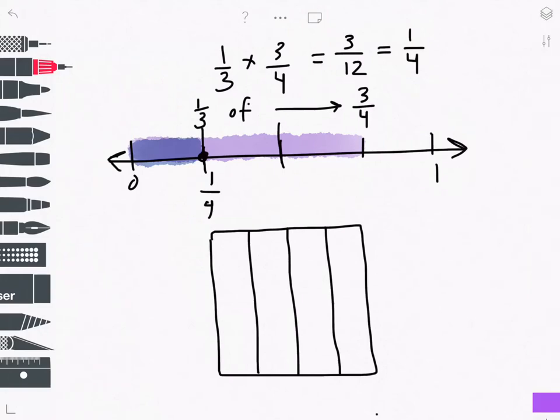I'll highlight 1 fourth, or I'm sorry, 3 fourths. That's the number I'm starting with, 3 fourths.